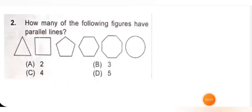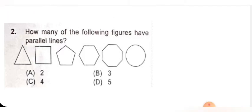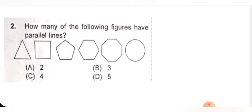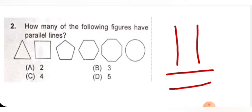How many of the following figures have parallel lines? Before finding the figure, we need to know what is the meaning of parallel line. Parallel line means that when two lines go together — if it is vertically, then it will go like this; horizontally, then it will go like this. So if two lines go together like that, they are called parallel lines.